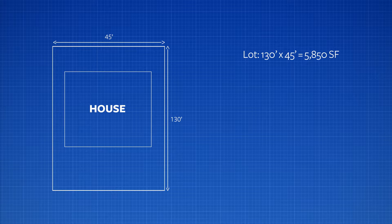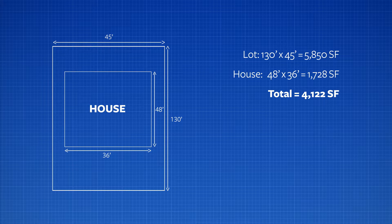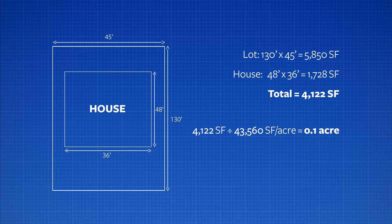However, the property also contained a house which is not container mosquito habitat, except perhaps roof gutters, which it did not have. So we can exclude the house from the total size. The house was 36 feet by 48 feet for a total of 1,728 square feet. If we subtract these, we get 4,122 square feet, which is approximately 0.1 acre.